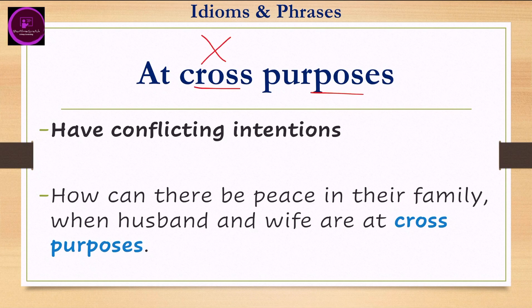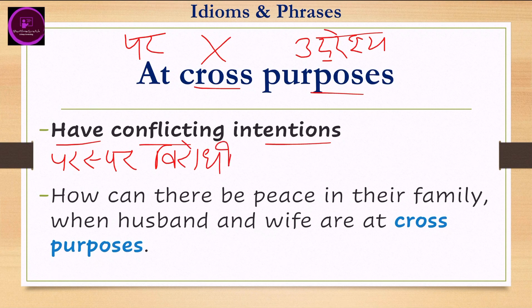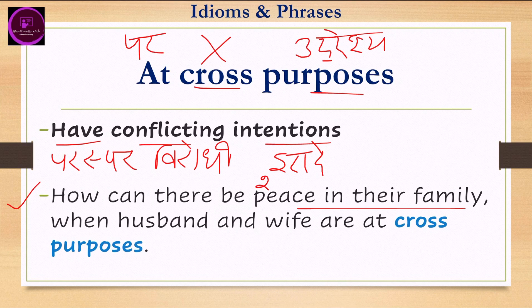Next is 'at cross purposes.' Cross is a sign that goes against another direction, and purpose means 'uddesh' (aim/intention). So 'at cross purposes' means to have conflicting intentions. Example: 'How can there be peace in their family when the husband and wife are at cross purposes?' — meaning when they have opposite intentions and hide their thoughts from each other.